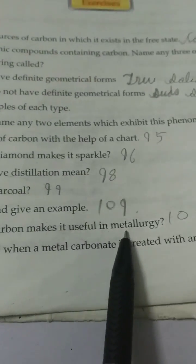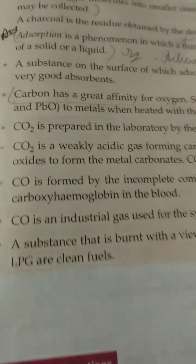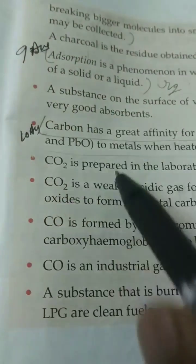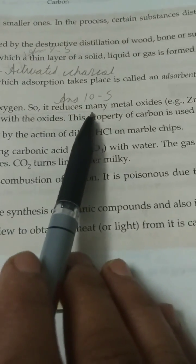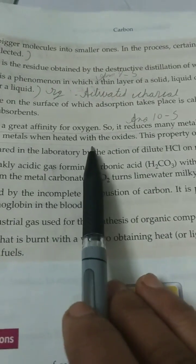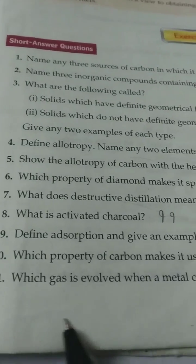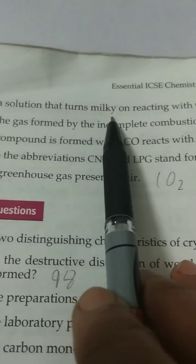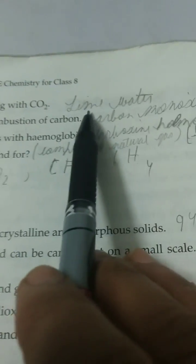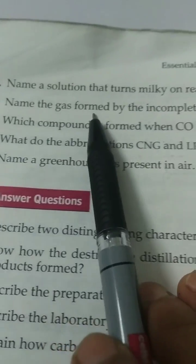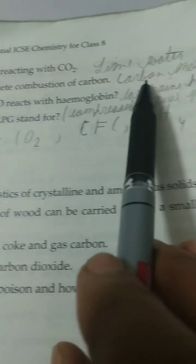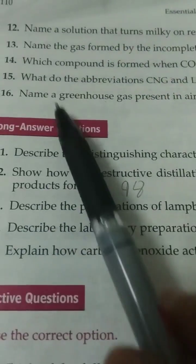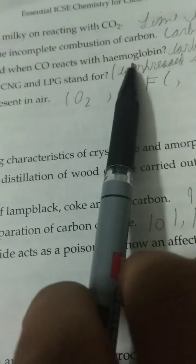Tenth, which property of carbon makes it useful in metallurgy? See same page 109. It is the tenth answer. Carbon has great affinity for oxygen, so it reduces many metal oxides to metal when heated with the oxide. This property of carbon is used in metallurgy. Eleventh, which gas is evolved when a metal carbonate is treated with an acid? Carbon dioxide. Twelfth, name a solution that turns milky on reacting with carbon dioxide. Lime water. Thirteen, name the gas formed by the incomplete combustion of carbon. Carbon monoxide. Fourteen, which compound is formed when carbon monoxide reacts with hemoglobin? Carboxyhemoglobin.